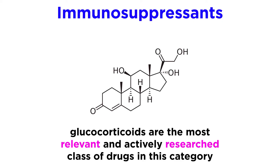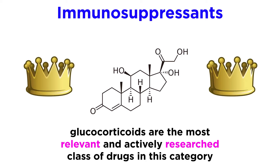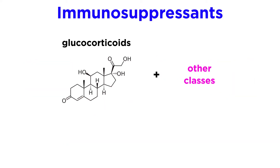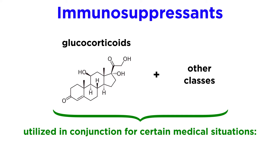Let's start with immunosuppressants. The most clinically relevant and actively researched class of immunosuppressants are the glucocorticoids, which we discussed at length in the previous tutorial, so these will not be discussed further here. However, it is worth emphasizing that when it comes to immunosuppression, glucocorticoids are king. Even still, the other classes of immunosuppressive drugs are certainly important and sometimes used in conjunction with glucocorticoids, albeit in more specific and less common medical situations.